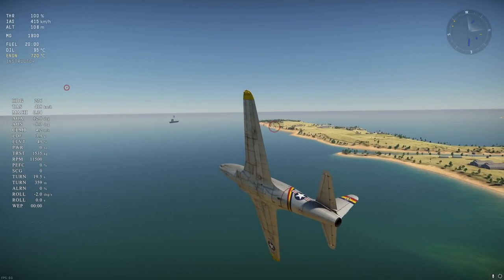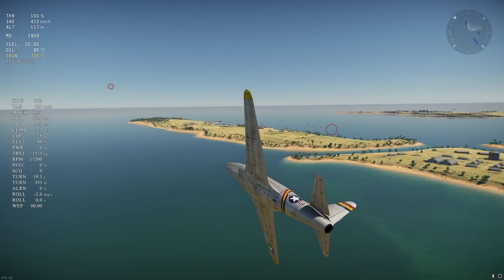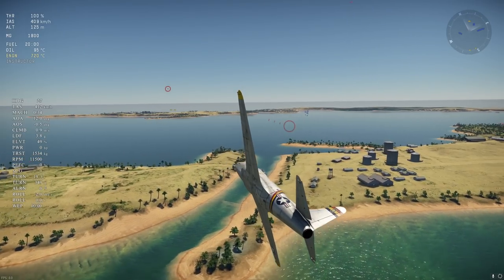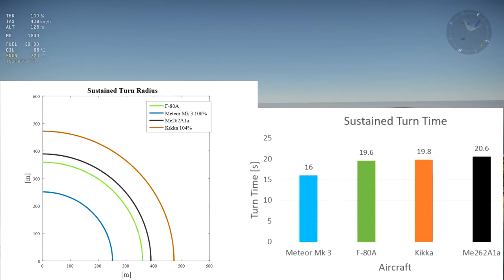For turn, the sustained turn radius and turn times were tested, as well as the high-speed turn radius at 700 km/h. Here are the results for the sustained turn. The graph on the left shows that the Meteor turns the tightest by a significant margin, even outturning most of the props it faces.